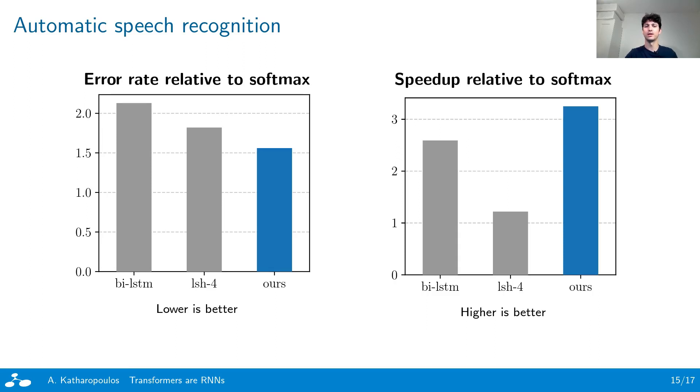On the other hand, in terms of time per epoch, all methods perform significantly better than softmax transformer. In particular, our linear transformer is more than three times faster per epoch, even though the average input sequence length is only 800 features. Furthermore, we observe that our linear transformer is both faster and achieves a lower error rate in comparison to the commonly used LSTM baseline.